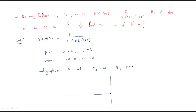Using these asymptote angles we will find the root locus plot. We begin drawing the root locus diagram with the three poles: s = 0, s = −1, and s = −2.